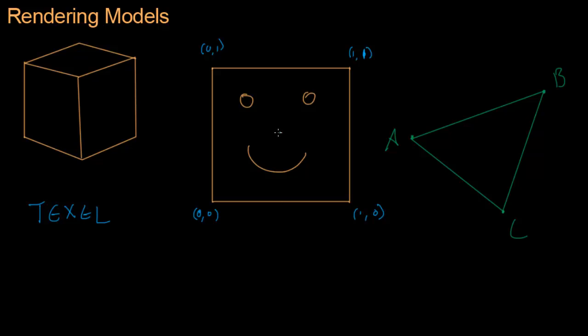For example, if I choose this point where the nose should be, which looks to be about 0.5, 0.5, right smack dab in the middle of the image, there's going to be a texel in the original image that should show up when I try to render that texture coordinate.